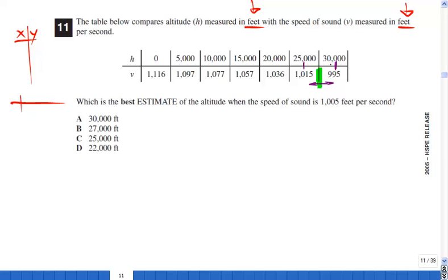Now, knowing that my altitude has to be between 25,000 and 30,000, I can eliminate which one? I can eliminate the 22,000 because that's outside. I'm somewhere between 25,000 and 30,000.